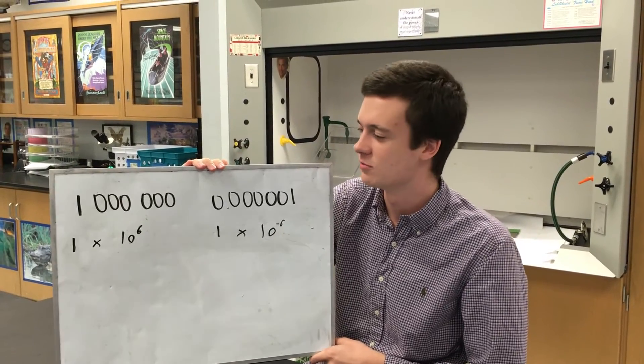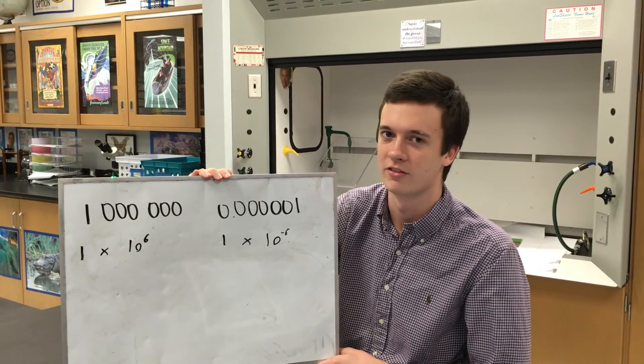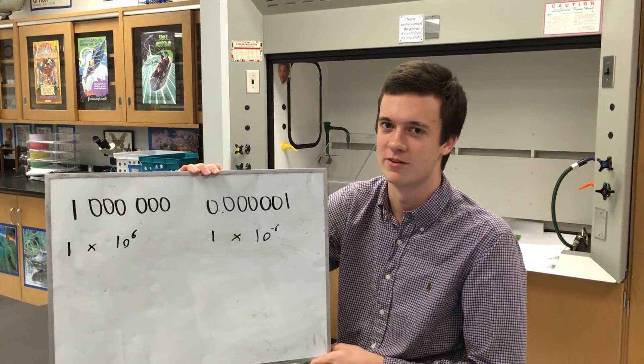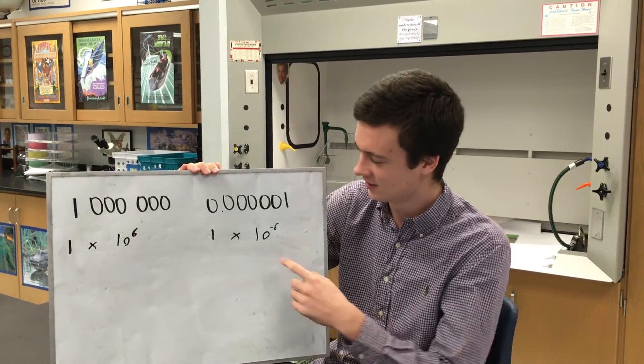In scientific notation, a positive exponent means you move the decimal place to the right. Or a negative exponent means you move the decimal place to the right. Like so.